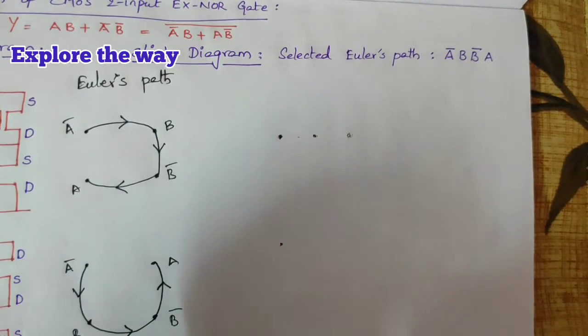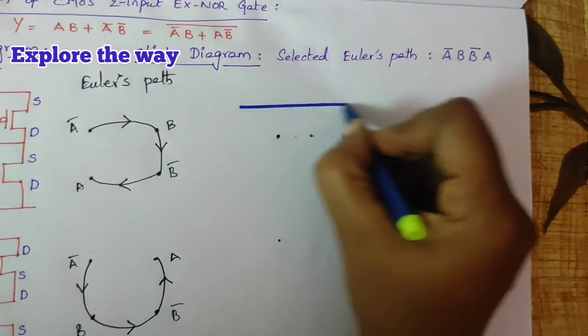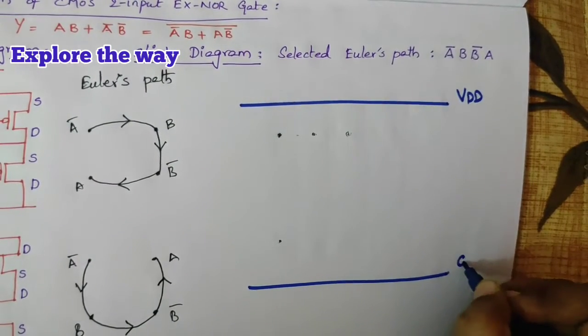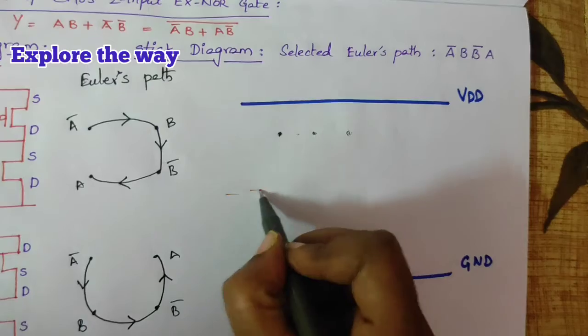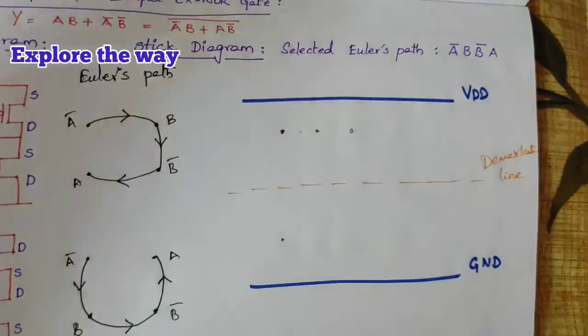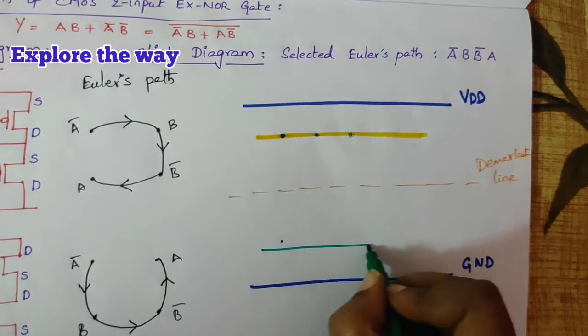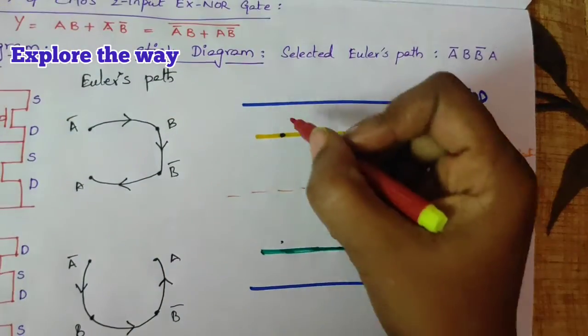Now, draw the stick diagram. Draw the supply lines. Demarkation line. Draw the diffusion paths. Form the 4 transistors.